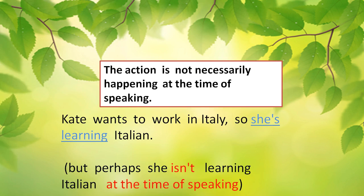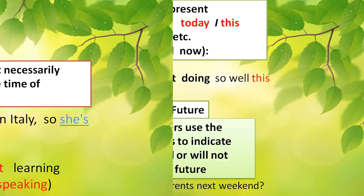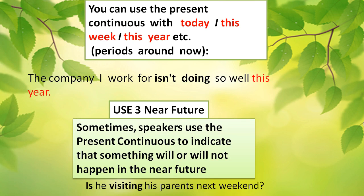The present continuous can be used when the action is not necessarily happening at the exact time of speaking. For example: 'Kate wants to work in Italy, so she's learning Italian.' Perhaps she's not learning Italian at this very moment, but she's learning today, tomorrow, and so on — not just right now.